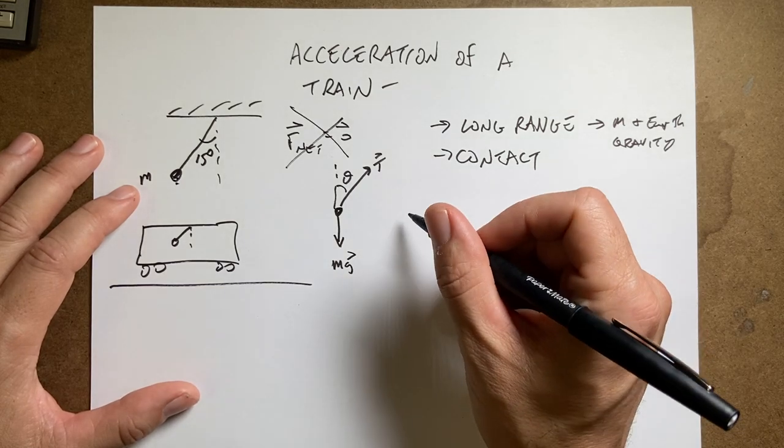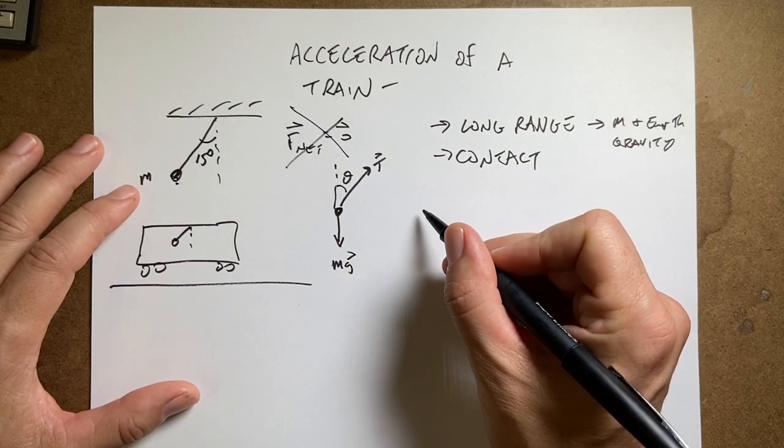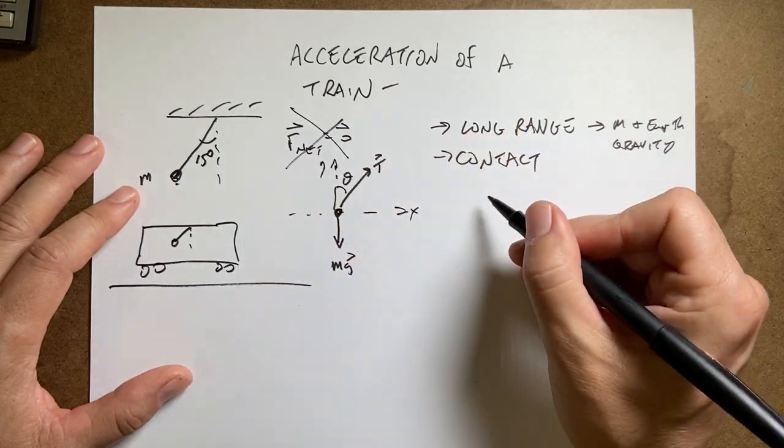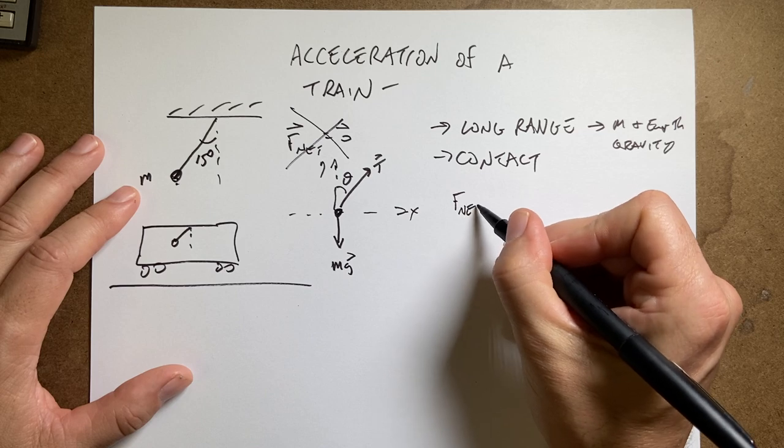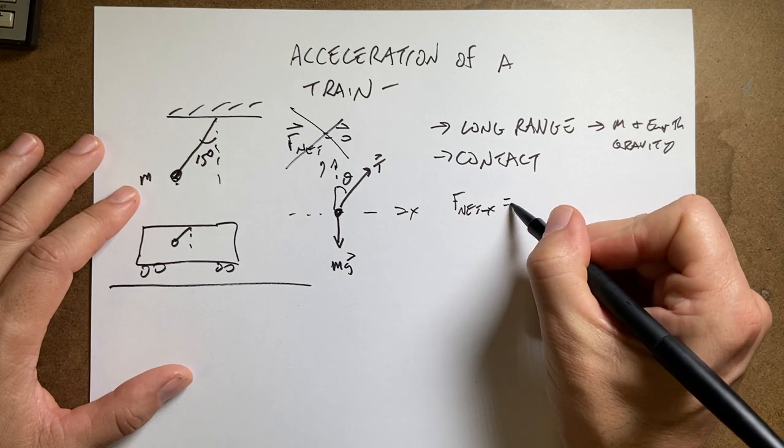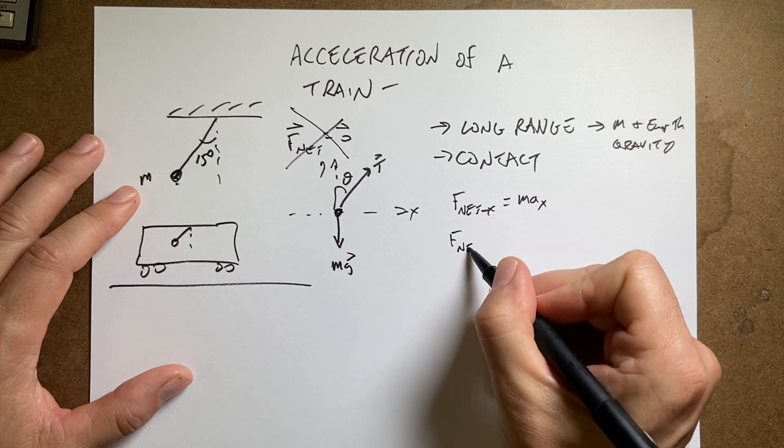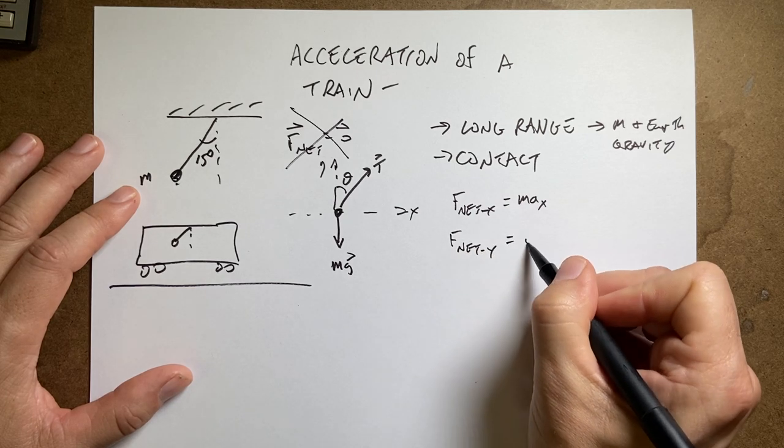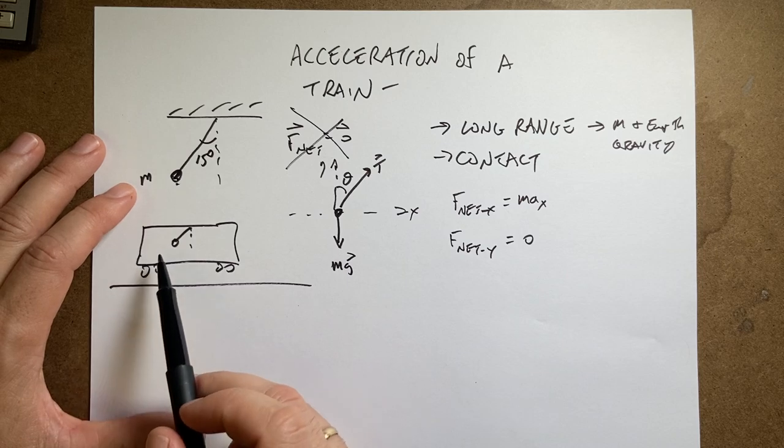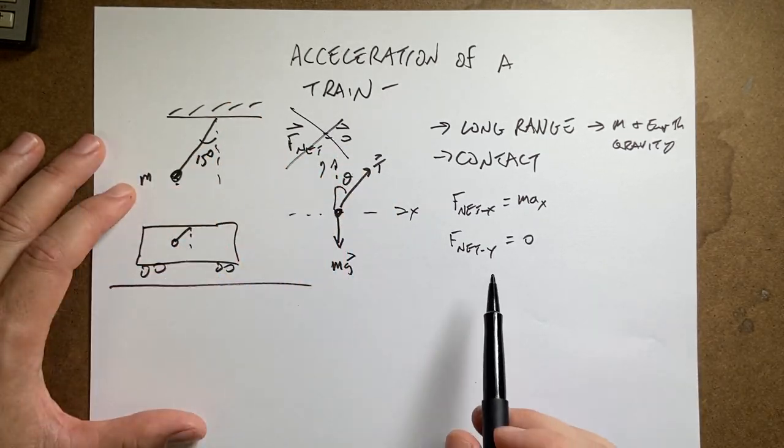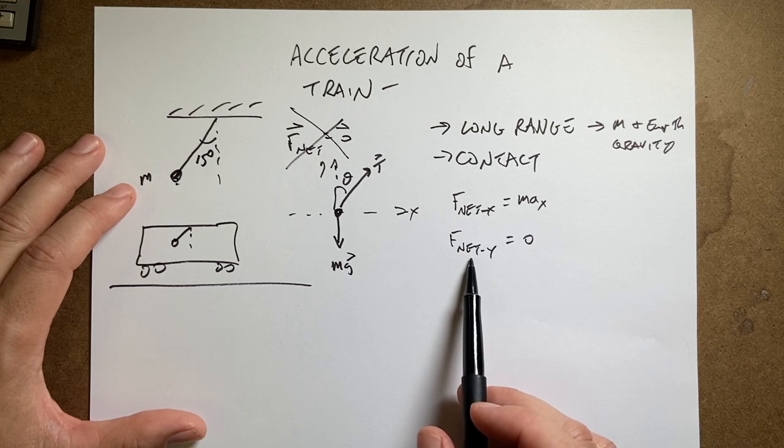So let's use our force equation in two directions. Let's call this the x direction and the y direction. So if I say net force in the x direction is mass times acceleration in the x direction. Net force in the y direction is zero. Because in this case, I'm assuming the train's on a level track. It's not moving up or down. It's not accelerating up or down. So that has to be zero.